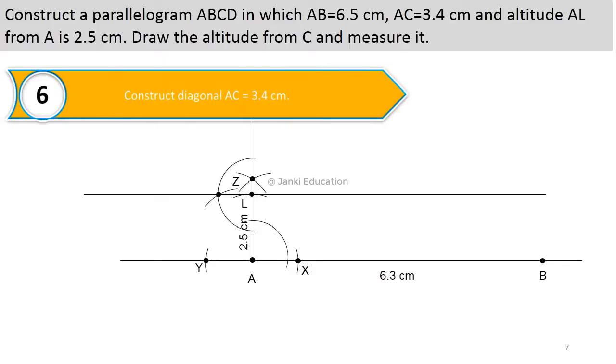Now construct a diagonal AC 3.4 cm. Here we got two sides of a parallelogram. One of the AB is ready with us, whereas from another side now we are looking for two more points, C and D.